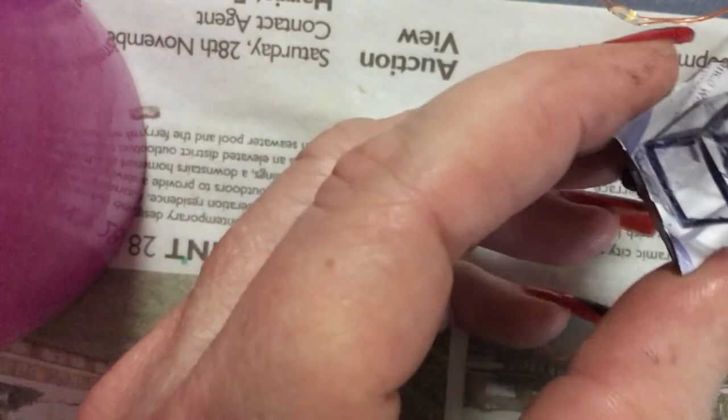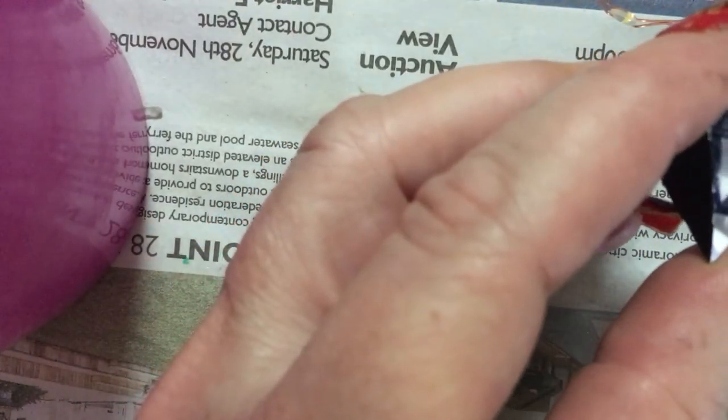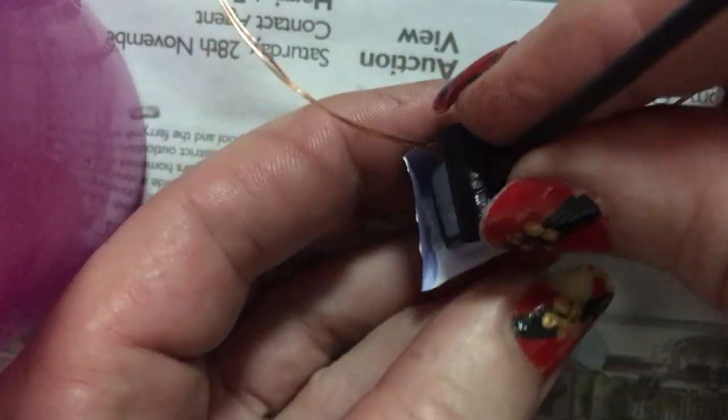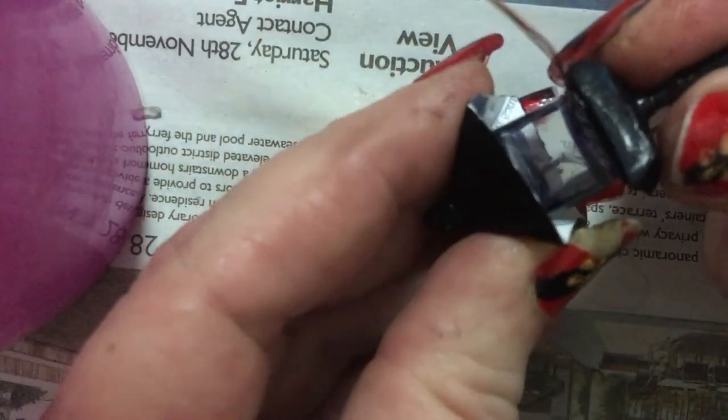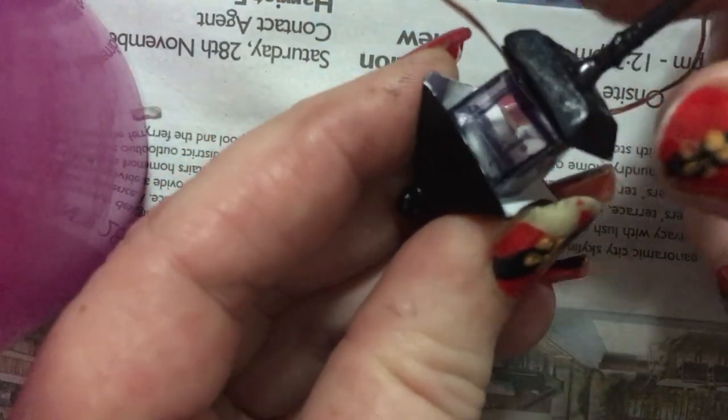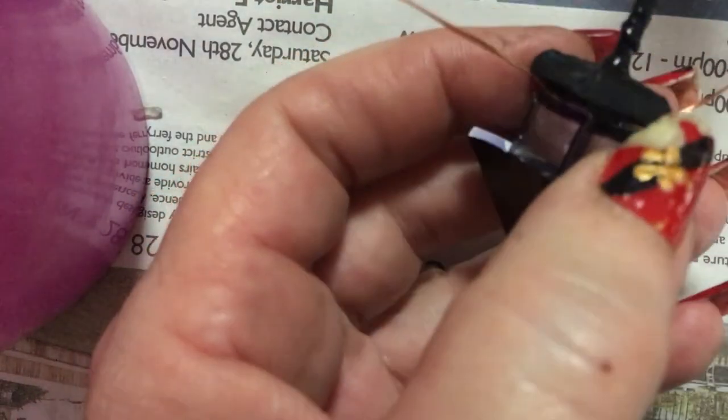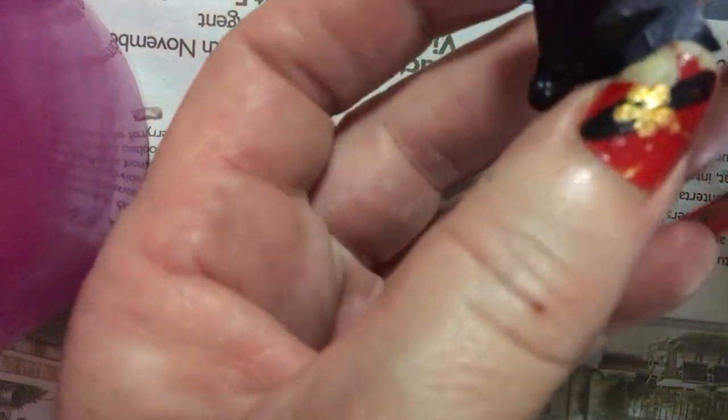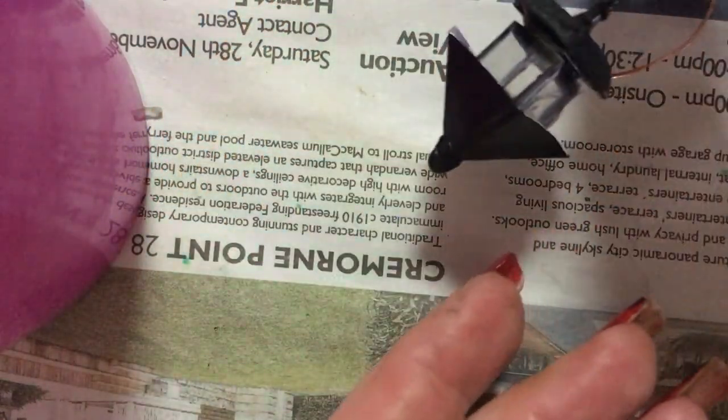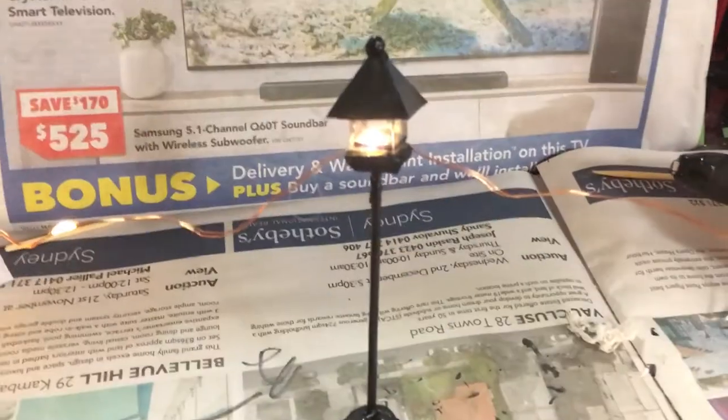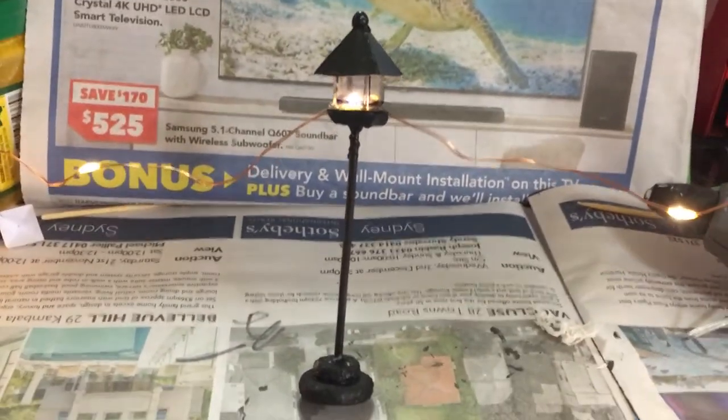Once again using some hot glue, just put it onto the tabs. Place your little lamp post on, so now the little light is inside your lantern. So that's your little street lamp.